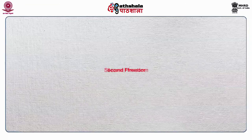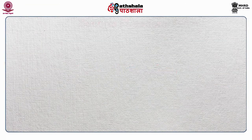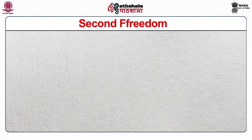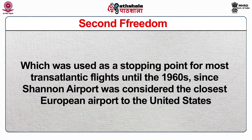The second freedom allows technical stops without letting any of the cargo come out. The most famous example of the second freedom is Shannon Airport in Ireland, which was used as a stopping point for most transatlantic flights until the 1960s, since Shannon Airport was considered the closest European airport to the United States.